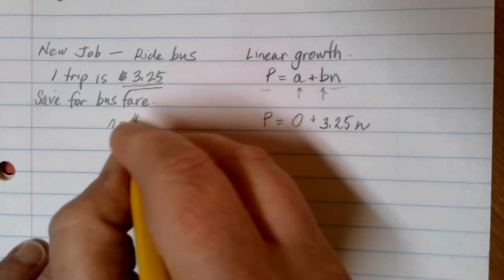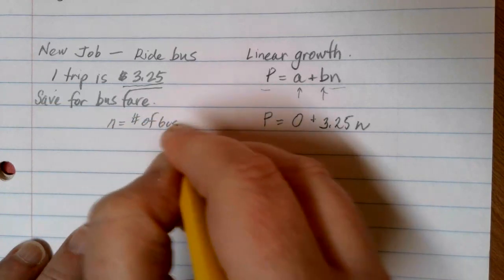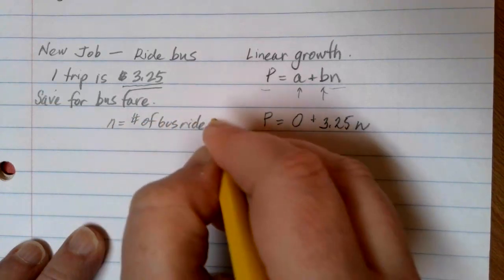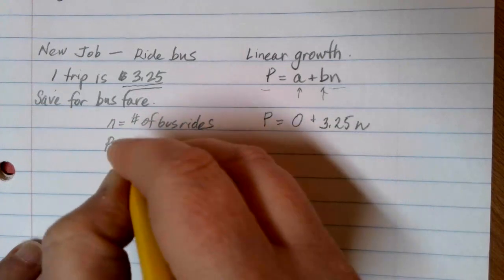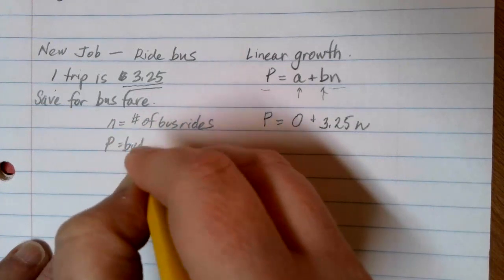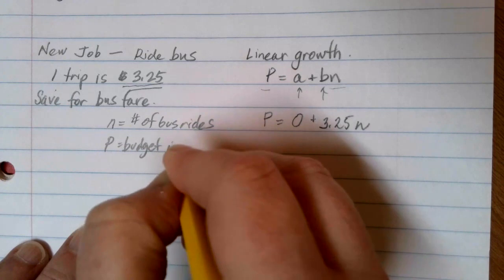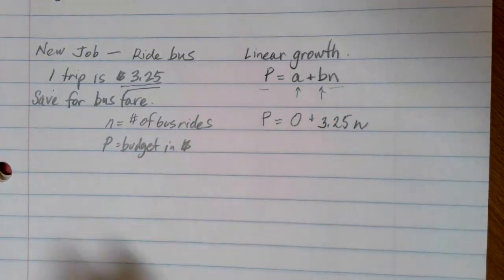N, of course, is the number of bus rides. And P is going to be our budget in dollars for the bus. How much we need to save.